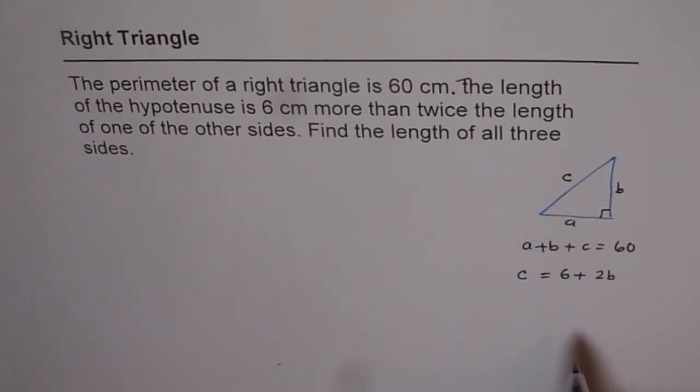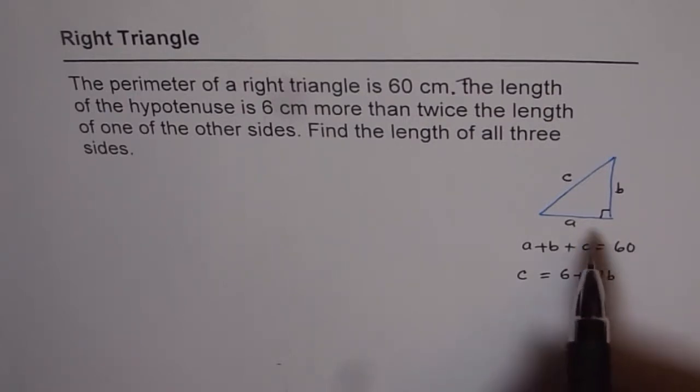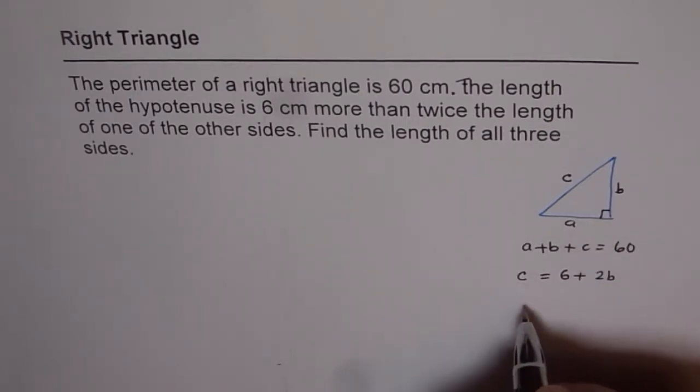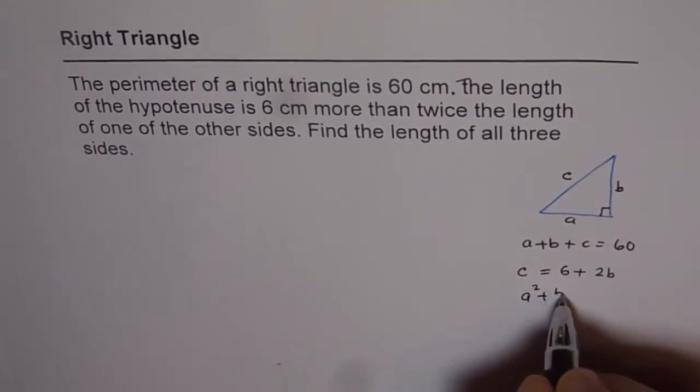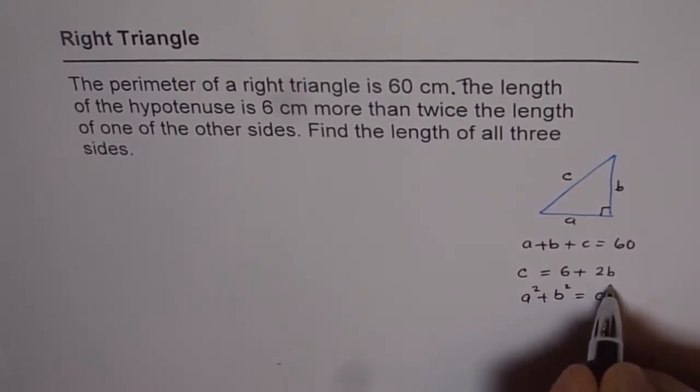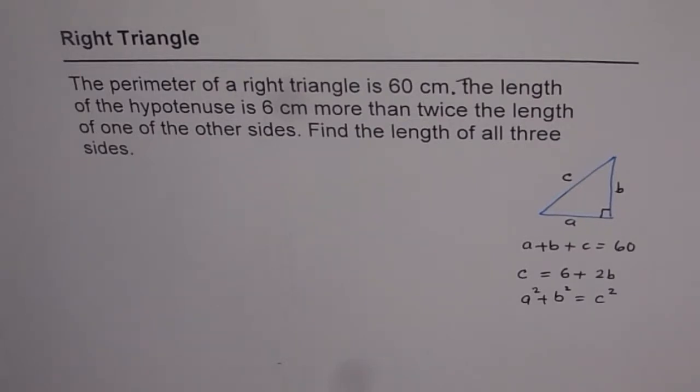There are three variables here and we have to have three equations to solve them. The third equation is from the Pythagorean theorem, which is a square plus b square equals c square. So now we have three equations and we should be in a position to solve this question.